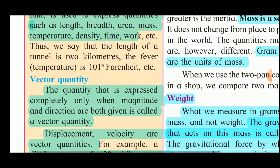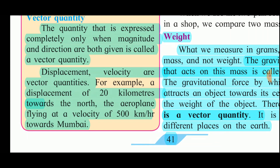A vector quantity is one that is expressed completely only when both magnitude and direction are given. Displacement and velocity are vector quantities because they have both magnitude and direction. For example, displacement of 20 kilometers towards the north — here 20 kilometers is the magnitude and north is the direction. Similarly, an aeroplane flying at 500 kilometers per hour towards Mumbai — 500 km/h is the magnitude and towards Mumbai is the direction. So displacement and velocity are vector quantities.